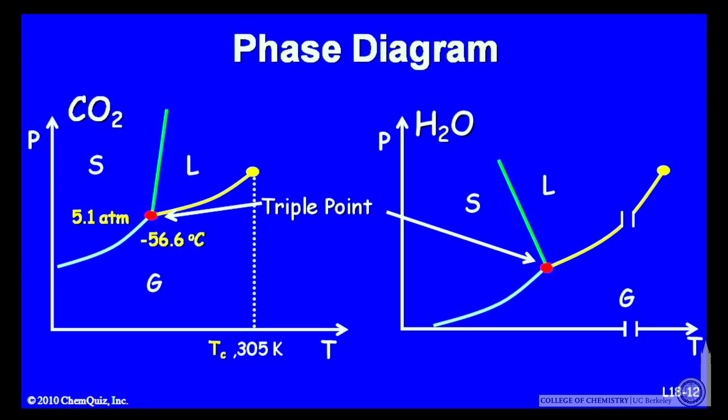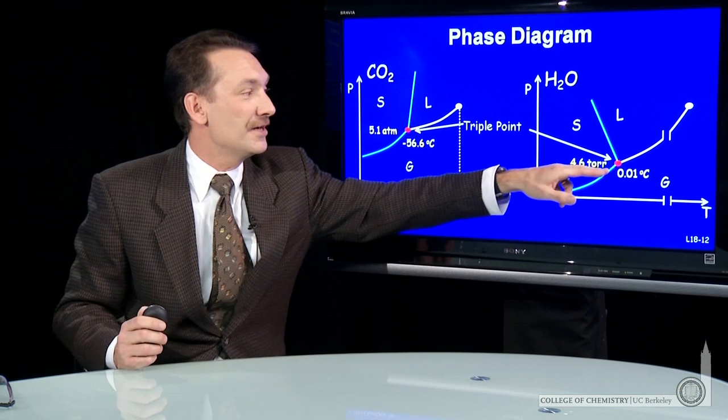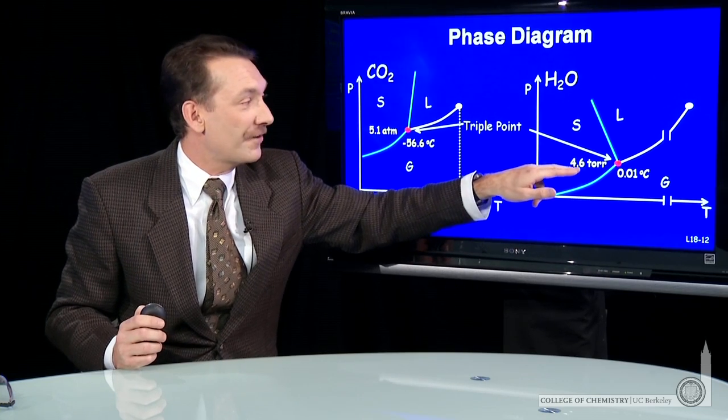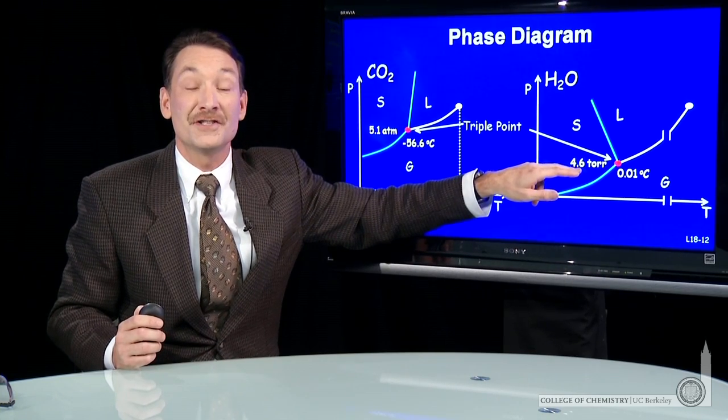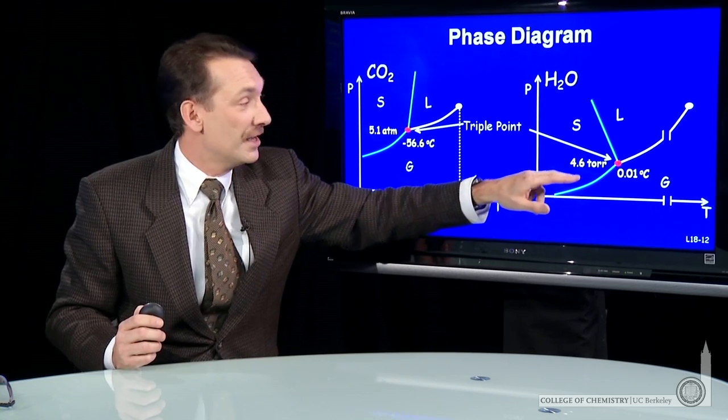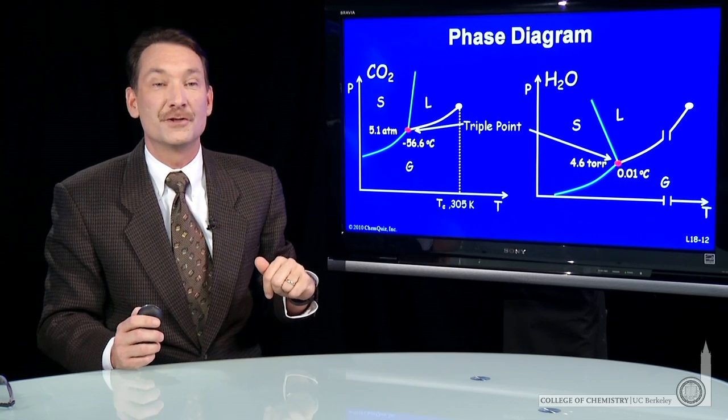Now, let's look at the triple point for water, 4.6 torr and 0.01 Celsius. So very near 0 Celsius, but a fraction of an atmosphere. There are 760 torr in one atmosphere. So a tiny fraction of an atmosphere is the triple point.